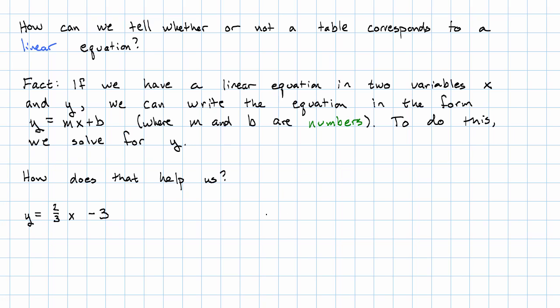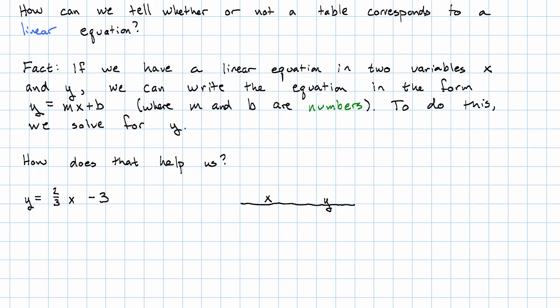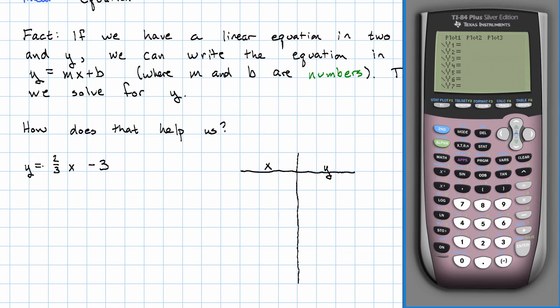Let's make a table for that equation, x and y. And I'm going to be a little bit clever about this. I'm going to put this into my calculator: y equals two-thirds x minus three. Looking at the table now.